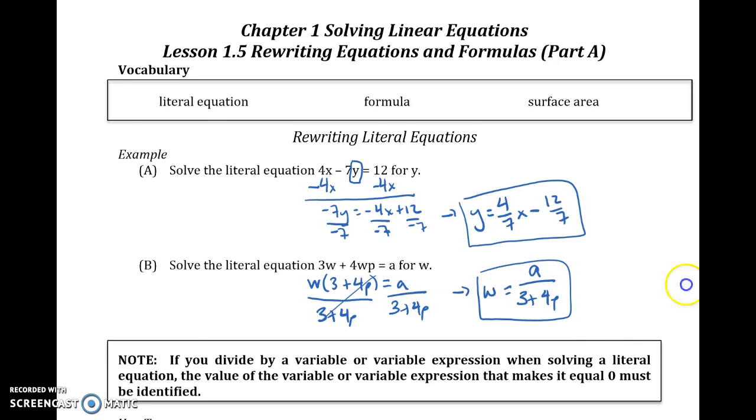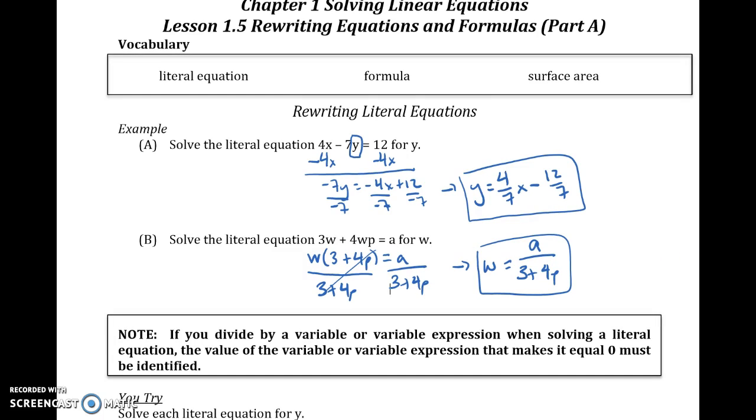So note down here, we must make sure that the value of the variable or variable expression that we divide by must not be 0. So what we want to do is we want to make sure that we identify what might make it 0. Because remember, if we have a 0 in the denominator, it's undefined because we can't divide by 0. So you can just do a quick check here. So here we can say 3 plus 4p cannot equal 0.